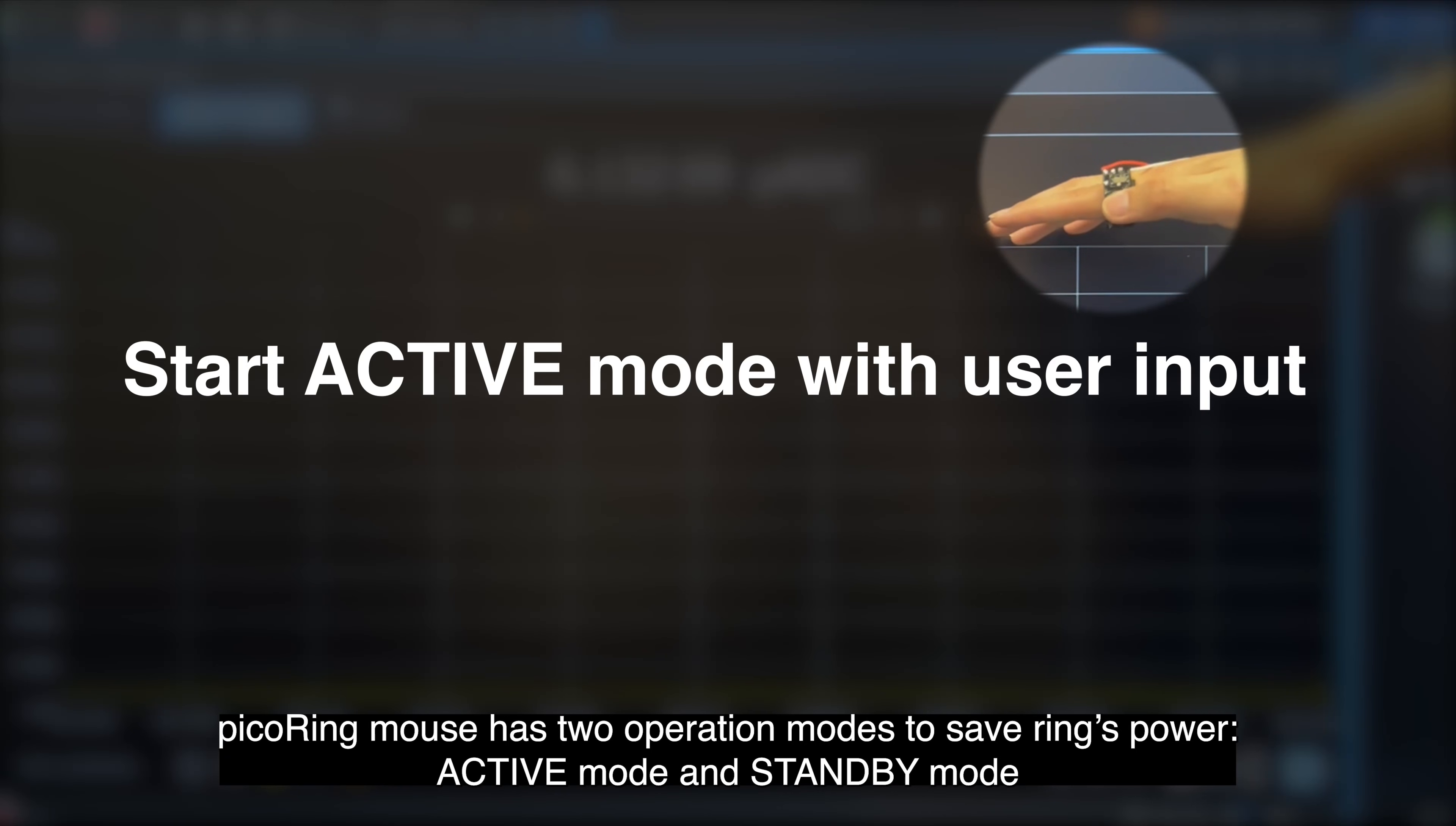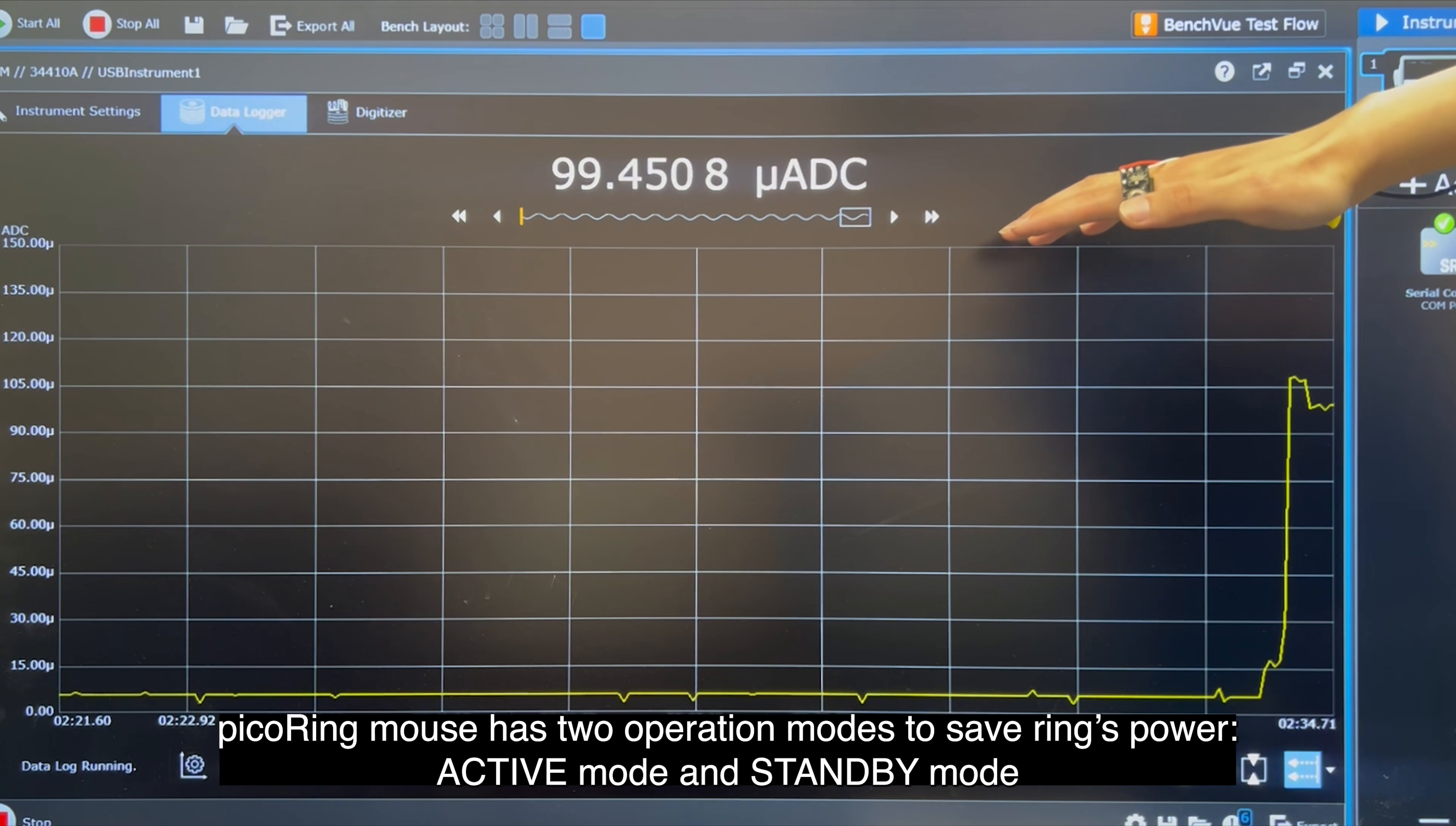Pico Ring Mouse has two operation modes to save the ring's power: active mode and standby mode.